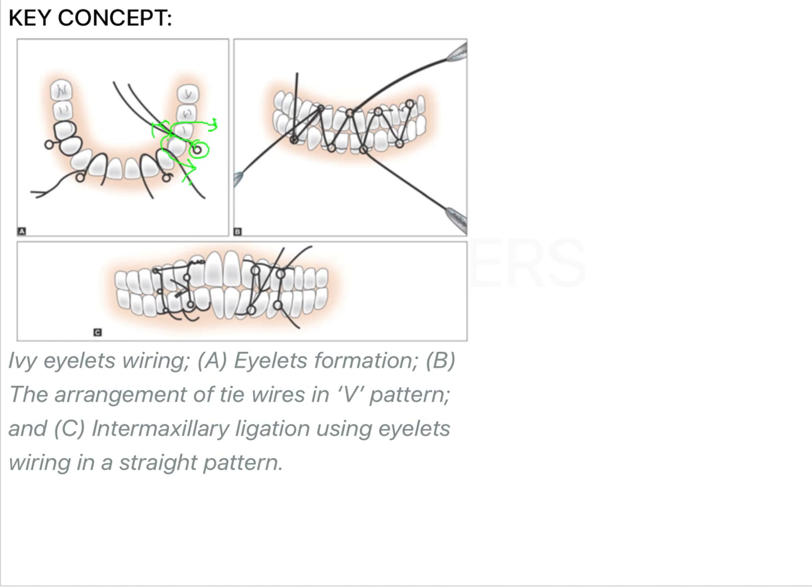After that, the distal wire will be threaded into this IV loop. And that's how we are going to do this, and then you will be having certain wires that will be threaded into these eyelets and these will be secure to do the intermaxillary fixation.